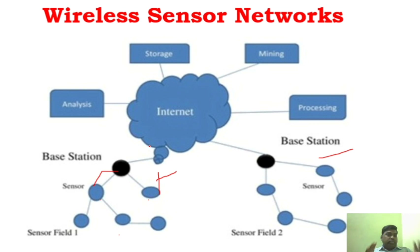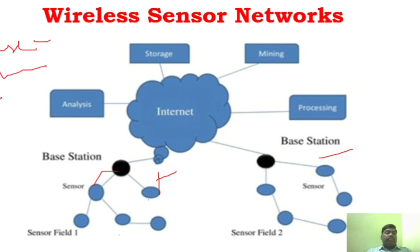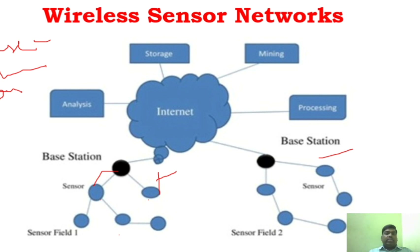The key point is that a sensor now does three things: it senses the information — which is gathering the information — it communicates the information, and it processes the information. If it needs to perform all three processes, then whatever application we use must support and be equipped with all those components.